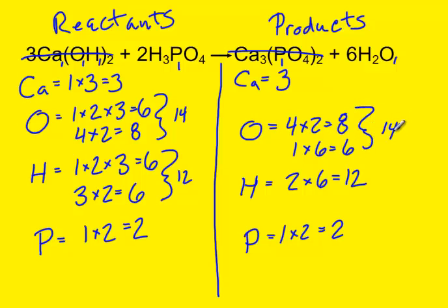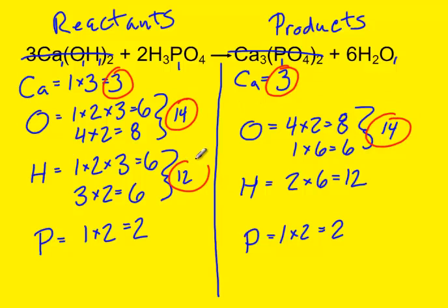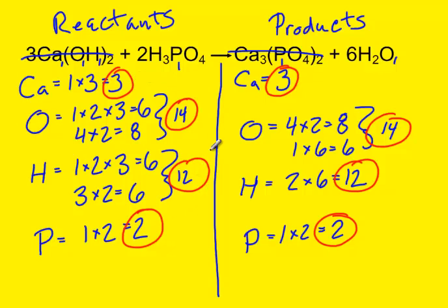Now we check: is this equation balanced? We started with 3 calcium — we ended with 3 calcium. We started with 14 oxygen — we ended with 14 oxygen. We started with 12 hydrogen — we ended with 12 hydrogen. We started with 2 phosphorus — we ended with 2 phosphorus. Since all of the atoms we started with are equal in both quantity and type on both sides, we know that this is a balanced equation.